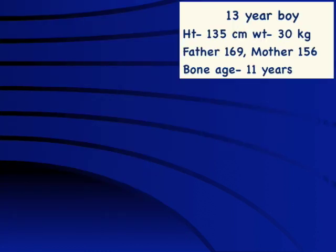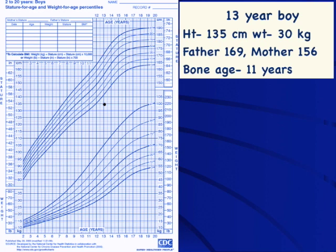Now this 13-year-old boy has a height of 135 cm, which is definitely short, and weight is also short. The yellow dot indicates height compared to bone age, which is 11 years. From an absolute perspective, he is both short and lean compared to the CDC population. His height age is 9.5 years and weight age is also 9.5 years — three and a half years behind in growth. Corrected for mid-parental expectation (father 169 cm, mother 156 cm, giving approximately 169 cm), he is definitely short compared to the family as well.